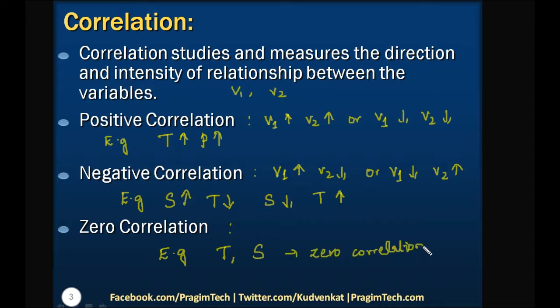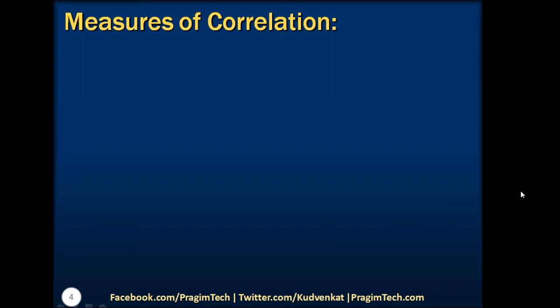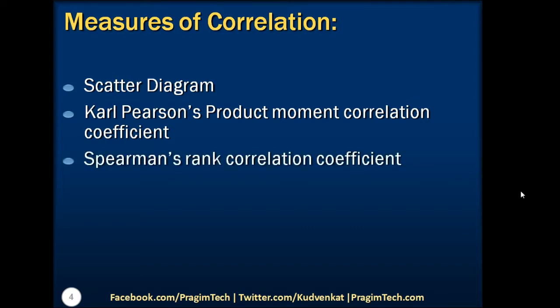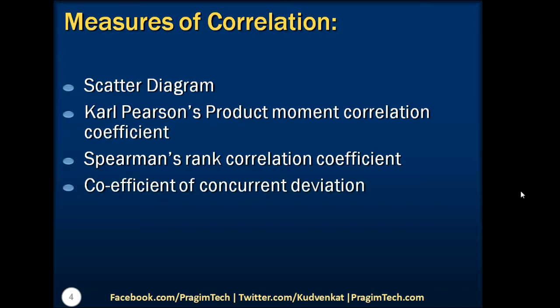From these types of correlation we can define the direction of correlation. Now let us look into different methods to find out the magnitude of correlation between two variables. The first one is the scatter diagram, which is a graphical representation of correlation. The second one is Karl Pearson's product moment correlation coefficient, useful for linear correlation. The third one is Spearman's rank correlation coefficient, useful for qualitative data. The fourth one is the coefficient of concurrent deviation, one of the simplest methods, used when we are not concerned about the magnitude of correlation.